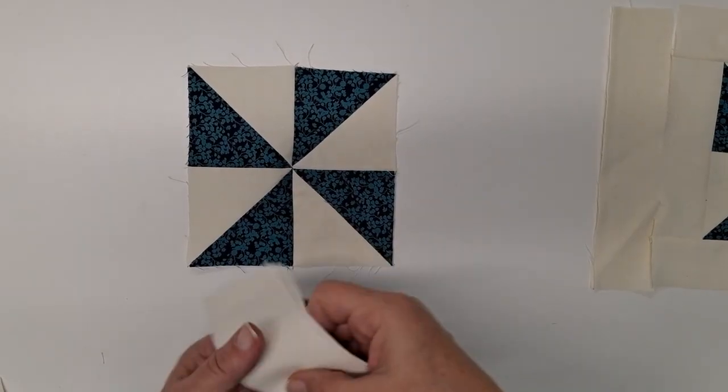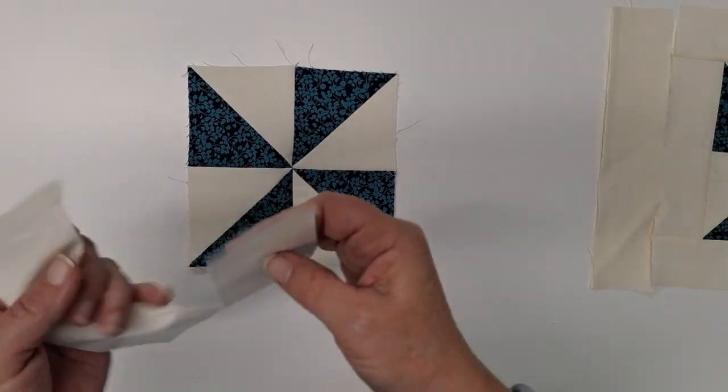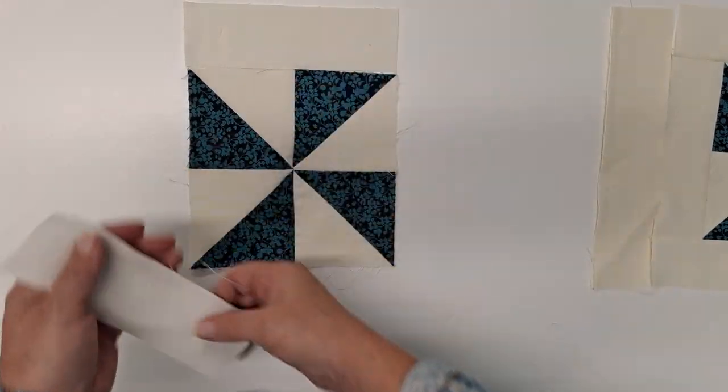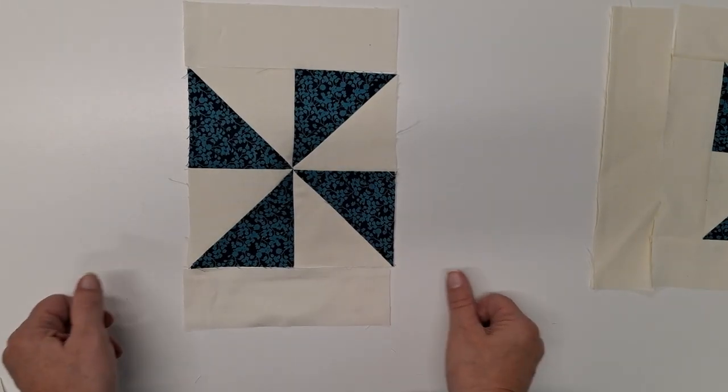To our pinwheel, we're going to take our 2 inch by 6½ inch strips and sew one on the top and one on the bottom.